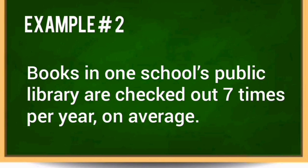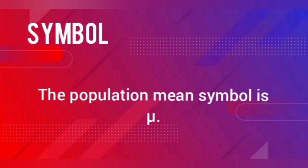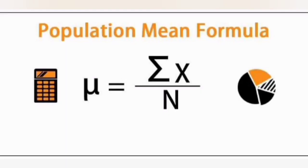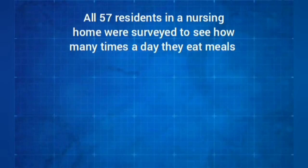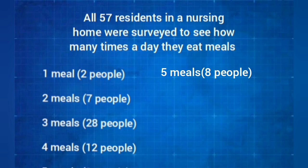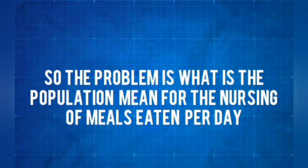Books in one school's public library are checked out seven times per year on average. Example number 1: All 57 residents in a nursing home were surveyed to see how many times a day they eat meals. 1 meal for 2 people, 2 meals for 7 people, 3 meals for 28 people, 4 meals for 12 people, and 5 meals for 8 people. The problem is: what is the population mean for the number of meals eaten daily?